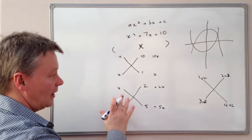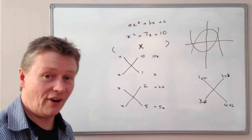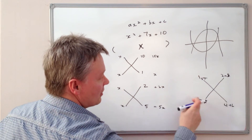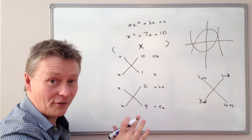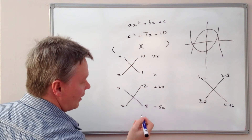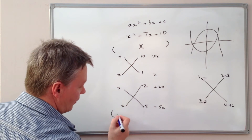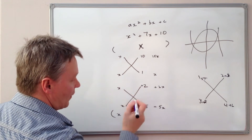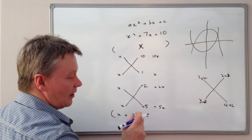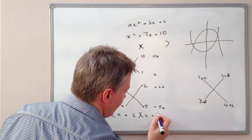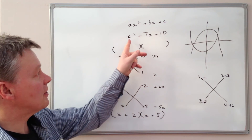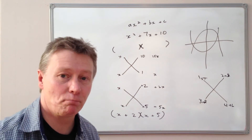So it looks like I've solved my factorization. I'm going to write it out now, in the same way as the cross. I've got x and positive 2 in the first bracket, and x and positive 5 in the second bracket. So that would be: first term x, second term plus 2, third term x, fourth term positive 5 — giving (x + 2)(x + 5). And that factorizes the expression x squared plus 7x plus 10.